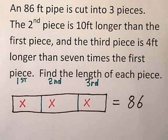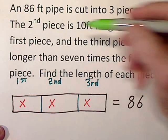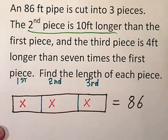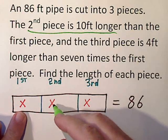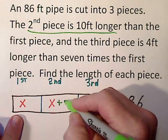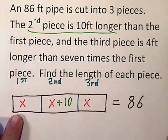Then they tell us, we'll focus on the second piece. The second piece is 10 foot longer than the first. So if the first one is x, the second one is x plus 10.